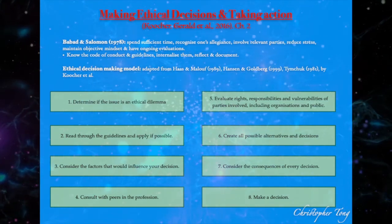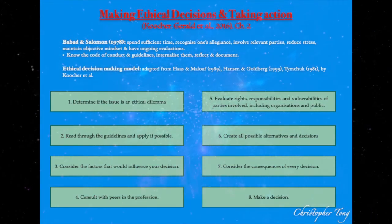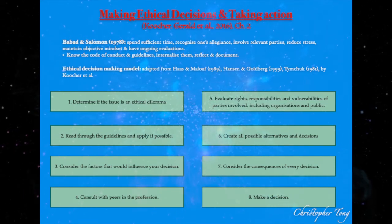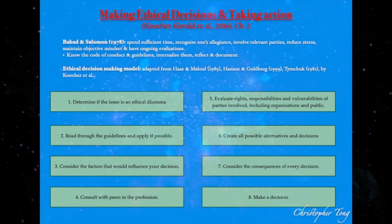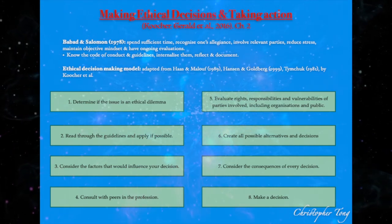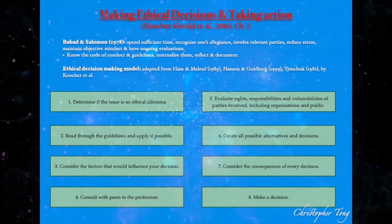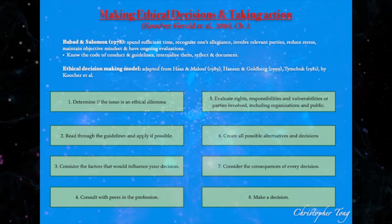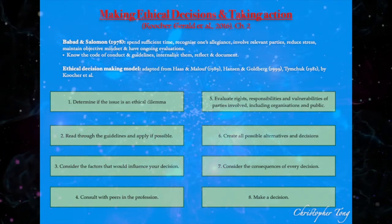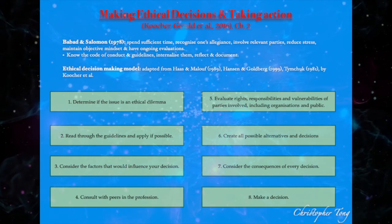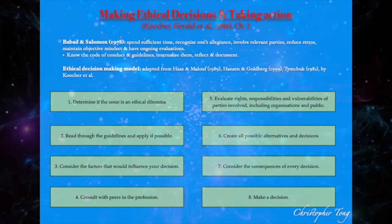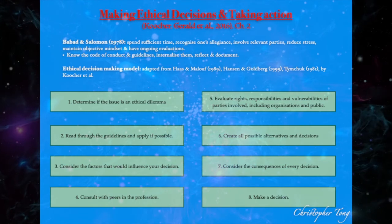Step 6: Create alternative decisions. Consider all options on the table and use a process of elimination for those that are too risky, expensive, or not ethical. Step 7: Consider the consequences of every decision. Reflect on all the social, psychological, financial, and short- and long-term legal and ethical ramifications, which may benefit or violate the various stakeholders.